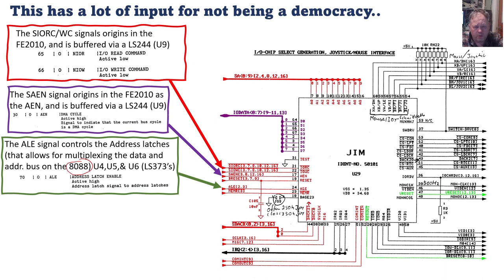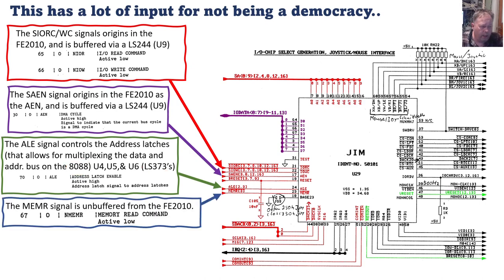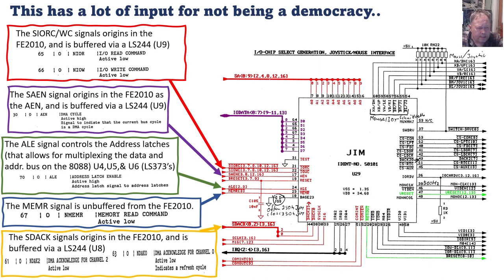On the 8088, it's the lower eight bits that are shared; on the 8086 it's actually all 16 data lines shared with all the address lines. This is buffered through three LS370 latches. The memory read signal is also a common signal on all IBM PCs — it's the memory read command, so when we read from memory this line goes high, and this is unbuffered from the FE2010.